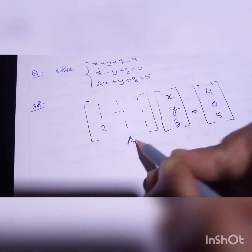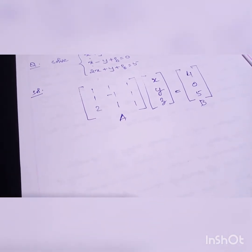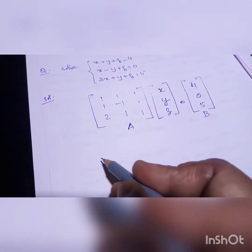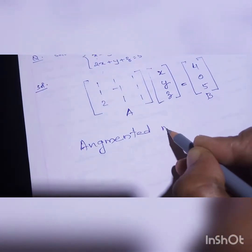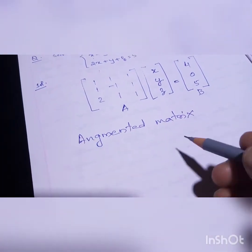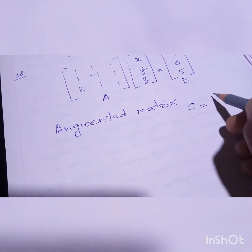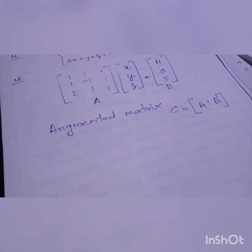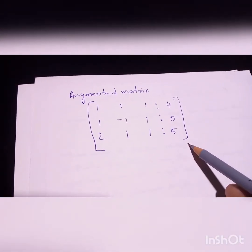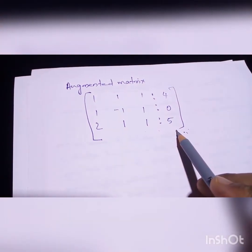This portion is A and this is B. Now for the solution using Gauss Elimination, first you have to generate the augmented matrix. The augmented matrix C is equal to A augmented with B. This is our augmented matrix for our question — that is A and B written together.